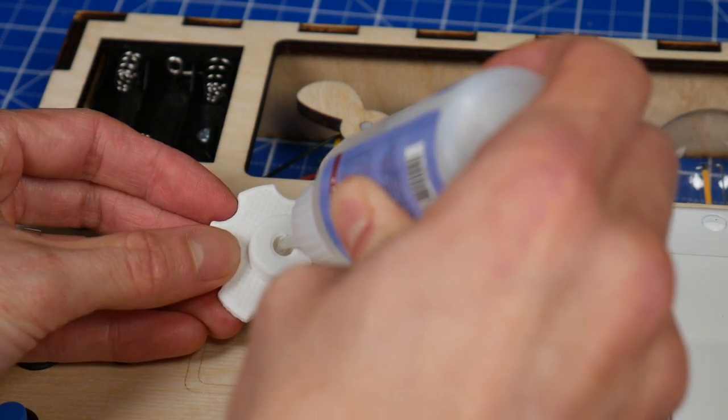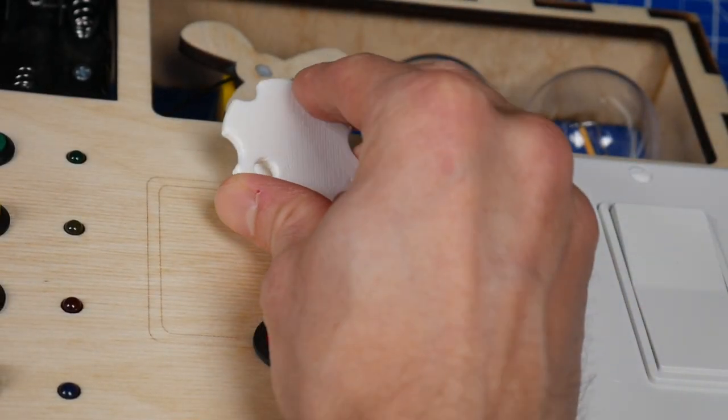Next I designed a knob in Fusion 360 and 3D printed it, and then this just gets glued onto the motor speed controller.